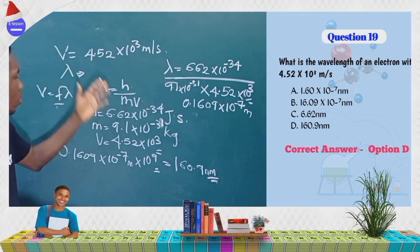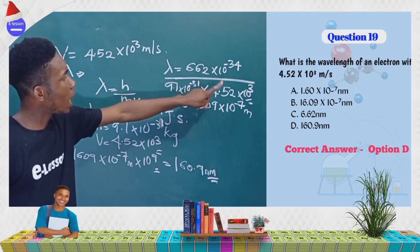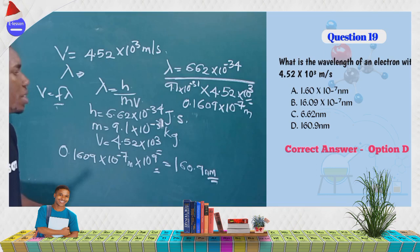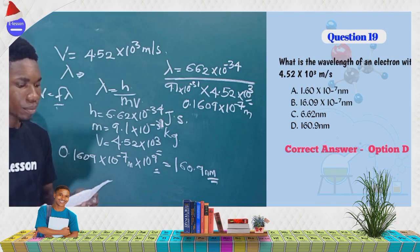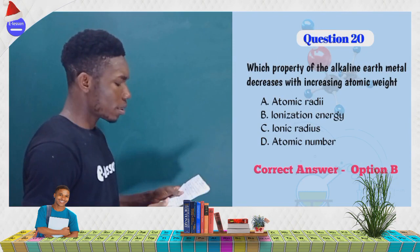Substituting and simplifying gives 0.1609 × 10⁻⁷ meters. Converting to nanometers by multiplying by 10⁹ gives the correct answer of 160.9 nm, which is option D.